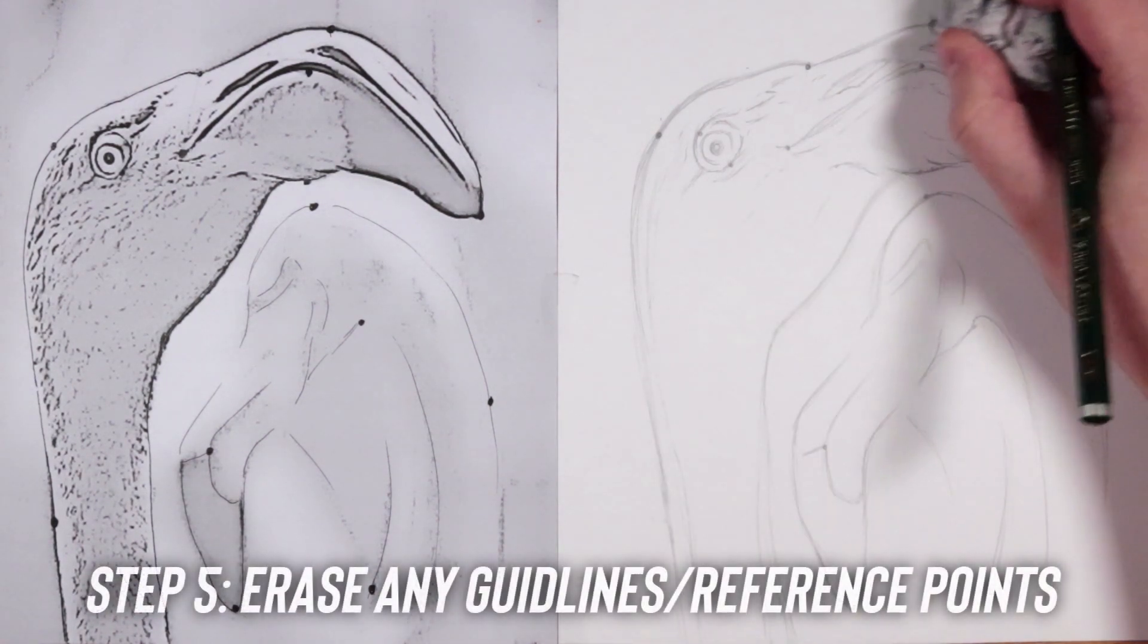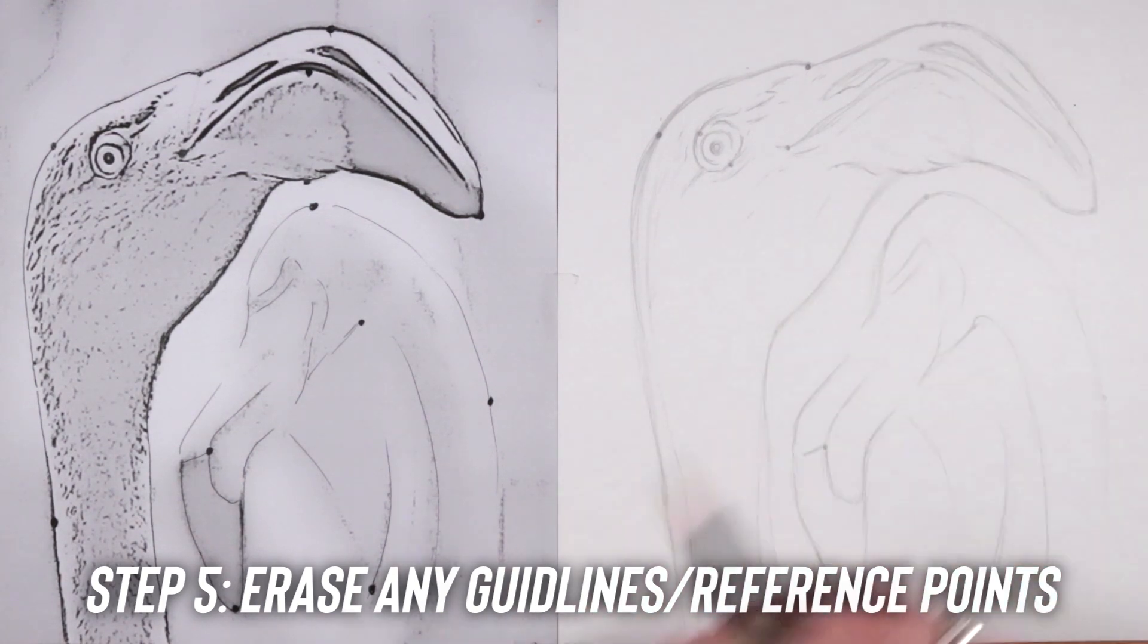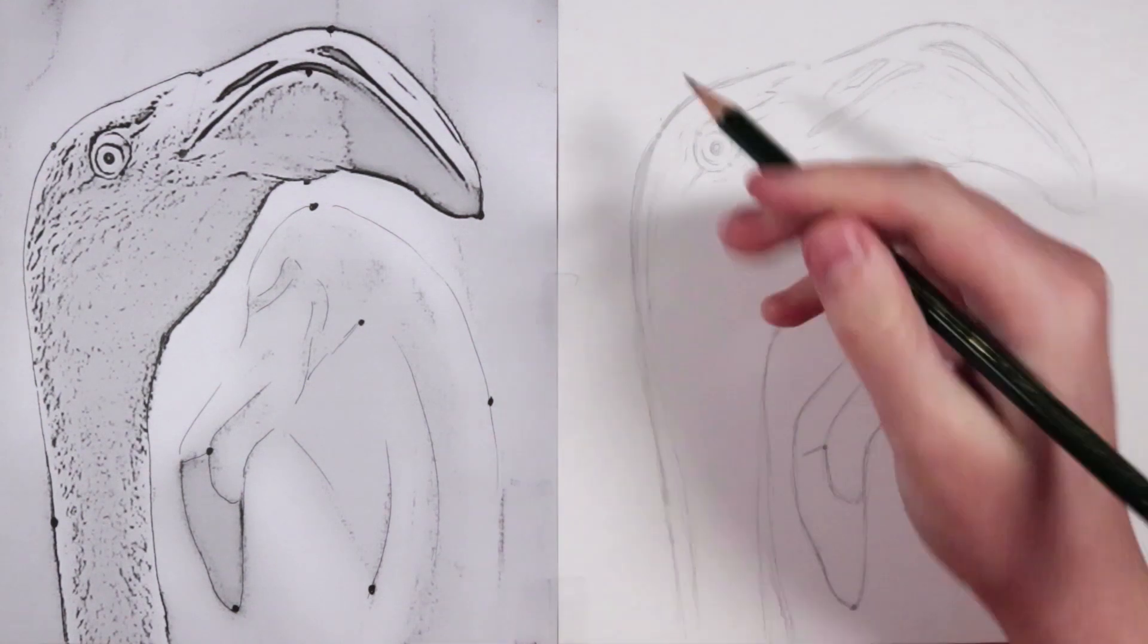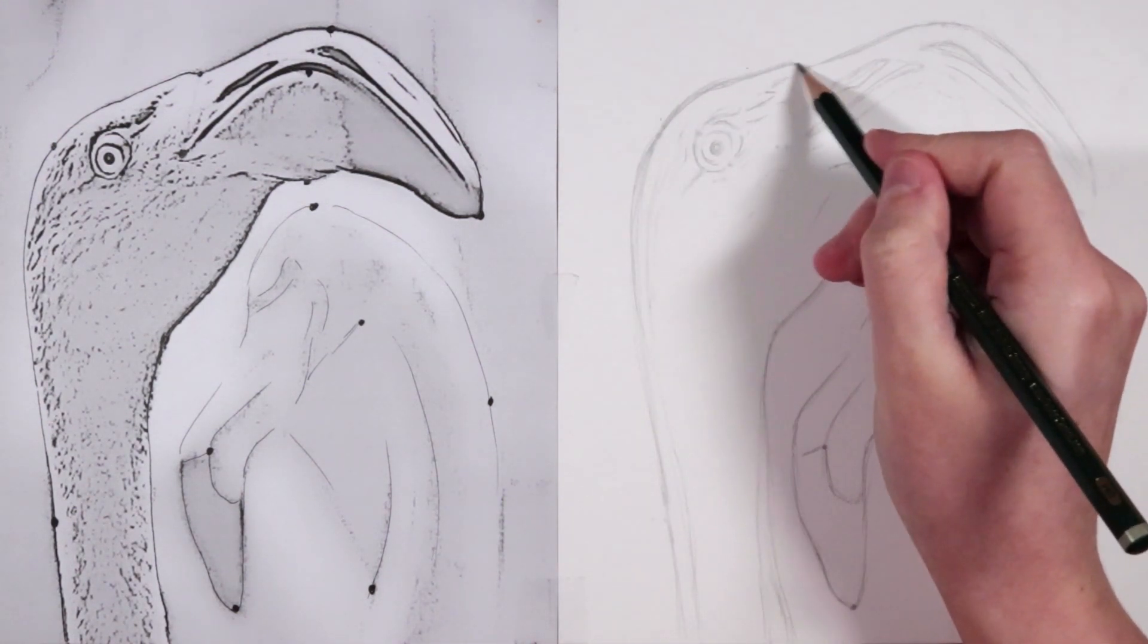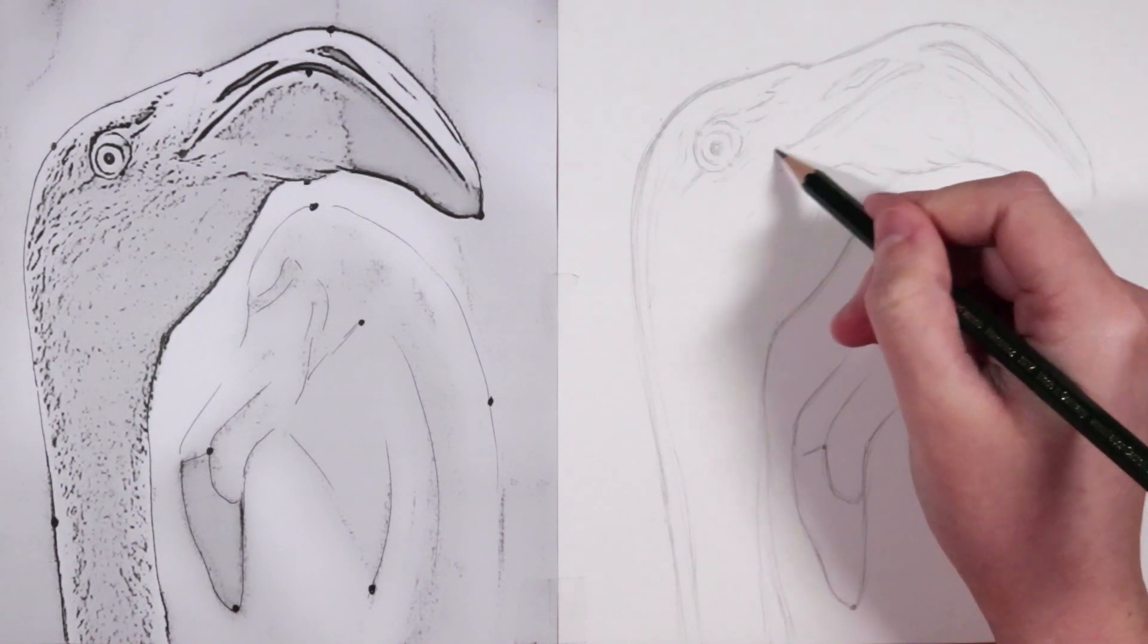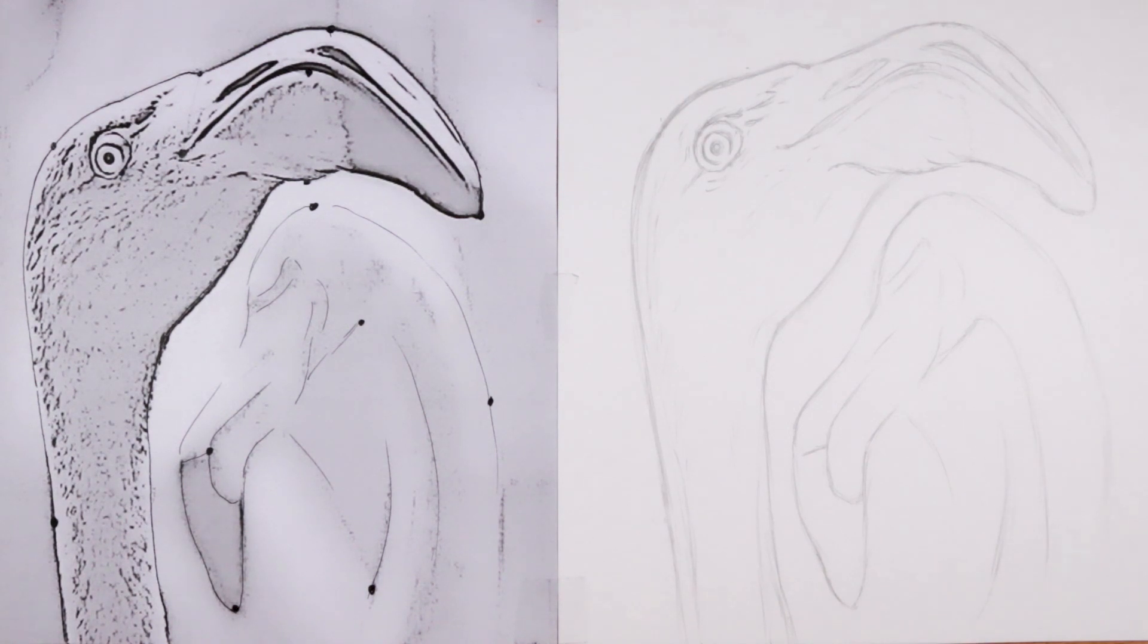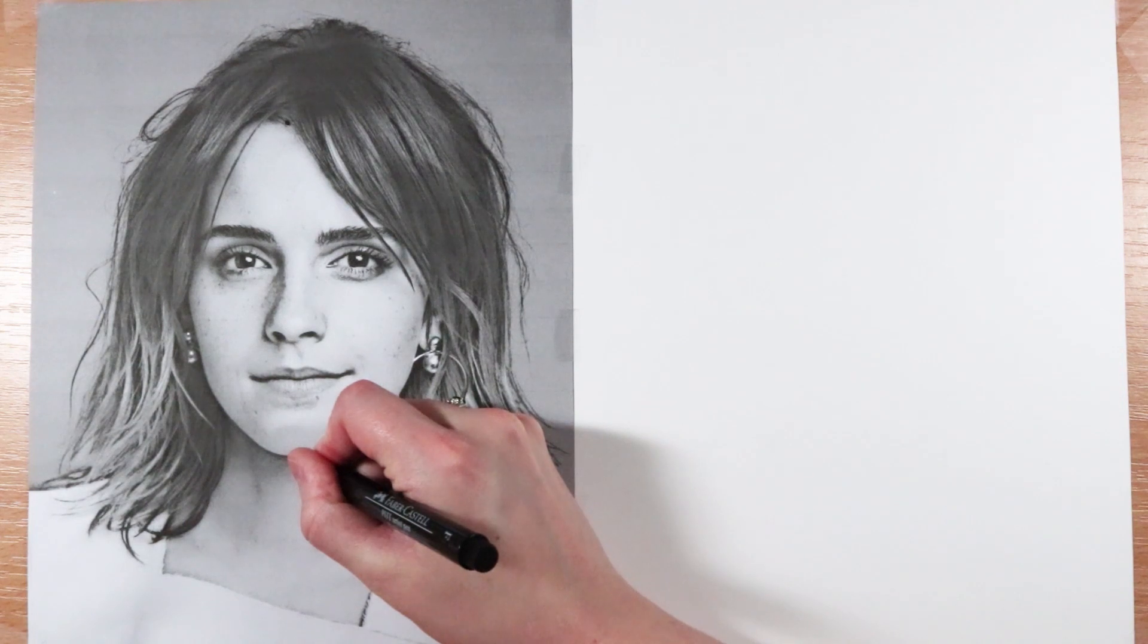Step five, the final step, is just to erase any of the little guidelines or reference points that you've drawn in to help you because you obviously don't want them showing in your final sketch. You can see that I've erased all of those dots and then I just fix any lines that I need. Now we've got a nice accurate sketch and it wasn't too overwhelming to do because we got in our reference points and we just had to look at it section at a time.